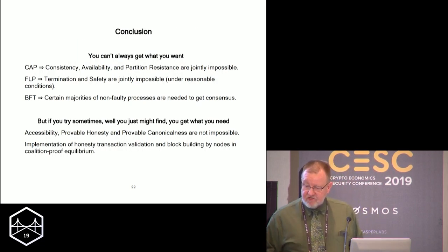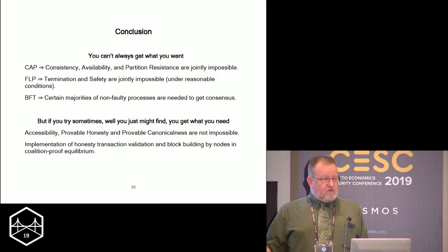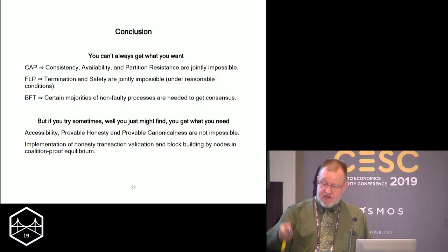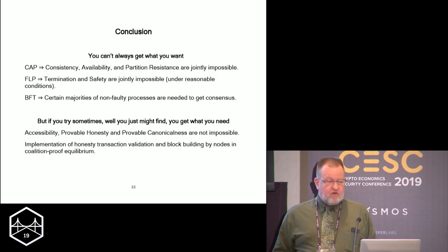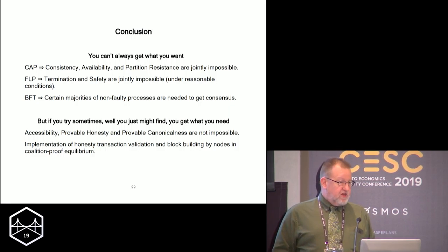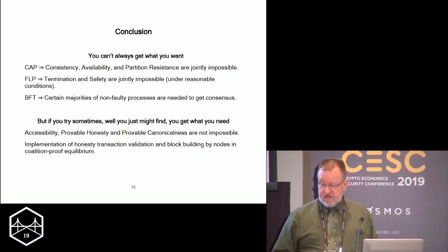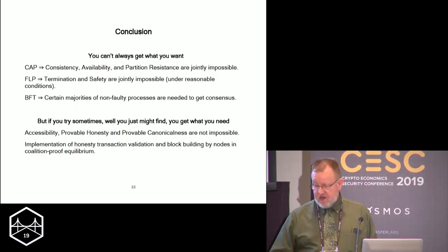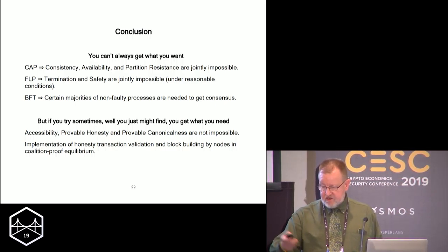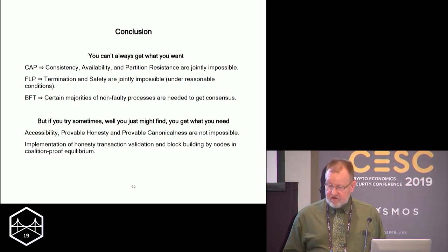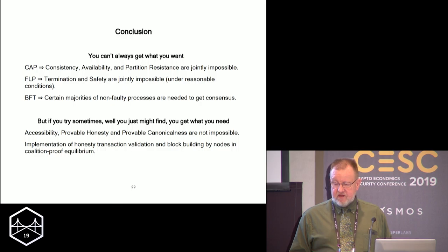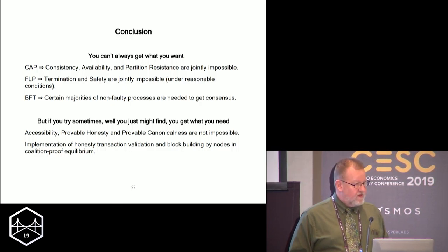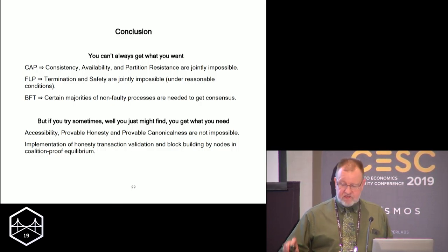So here's the conclusion: you can't always get what you want. The impossibility theorems tell us we can't get everything. But if you try hard, you can get what you need. What you need, I claim, is accessibility, provable honesty, and provable canonicalness, and implementation of honest transaction validation in coalition-proof equilibrium. That should be the design goal. Thanks very much.